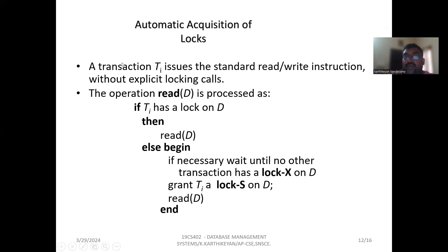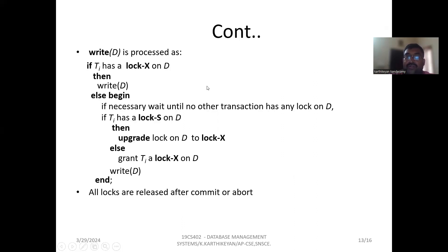Automatic acquisition of locks: transaction Ti issues standard read and write operation instructions without explicit locking calls. Transaction to read A is processed as if Ti has lock on D. Then read(D), else begin: if necessary, wait until no other transaction has lock-X on D, grant Ti a lock-X on D, read operation read(D), end.